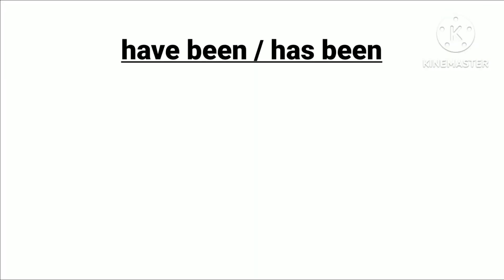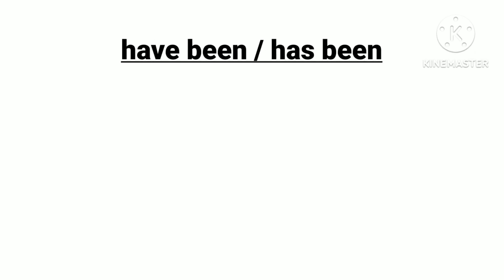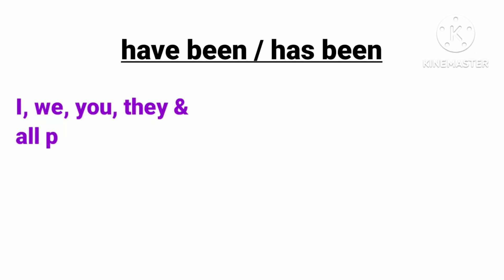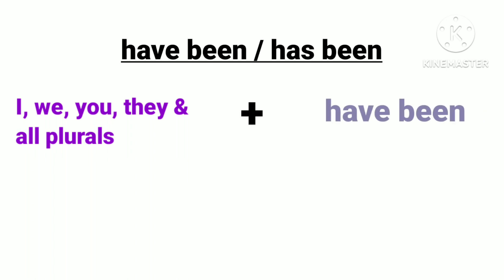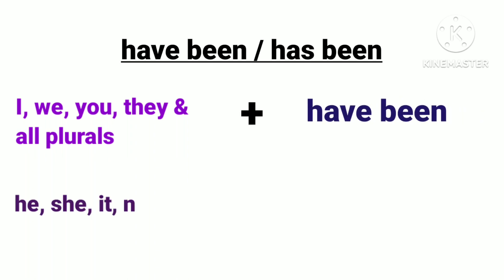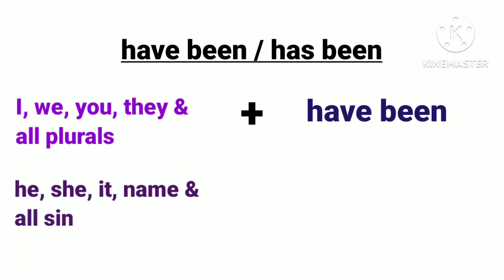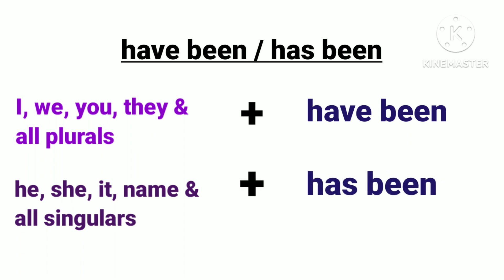have been and has been. Subjects I, we, you, they and all plurals ke saath 'have been' use hota hai. He, she, it, name and all singulars ke saath 'has been' use hota hai.